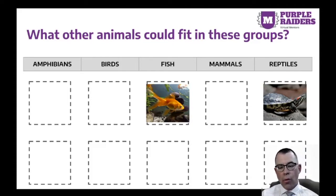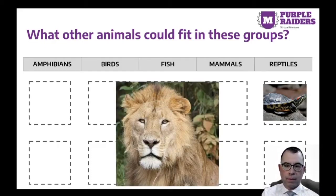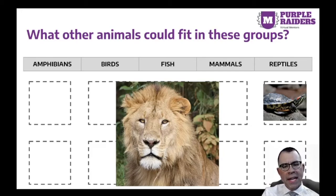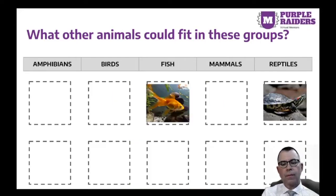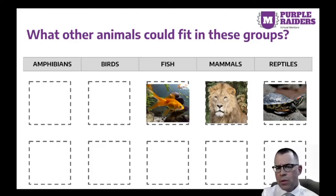Let's try one more before you complete the self-check. Here we have a lion. The lion is warm-blooded. It's an animal that gives birth to live cubs. What group does the animal belong to? I hope you said mammals because that's the proper classification for a lion. You seem to be doing pretty well with this. Let's try a self-check.